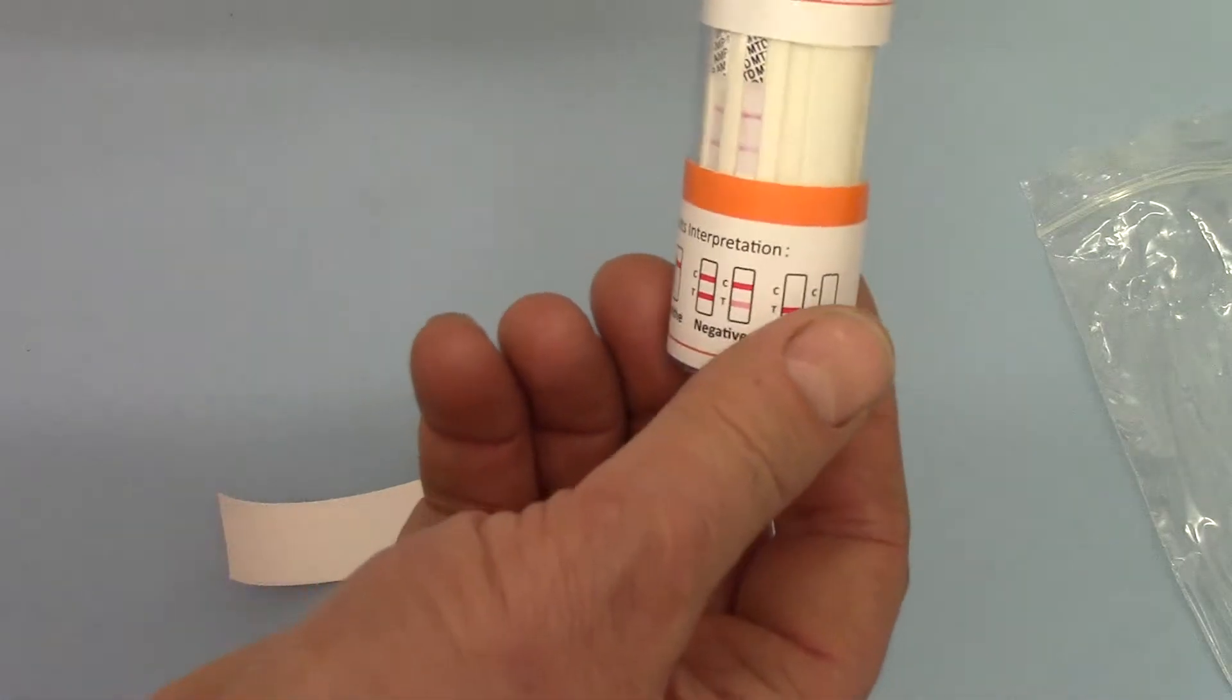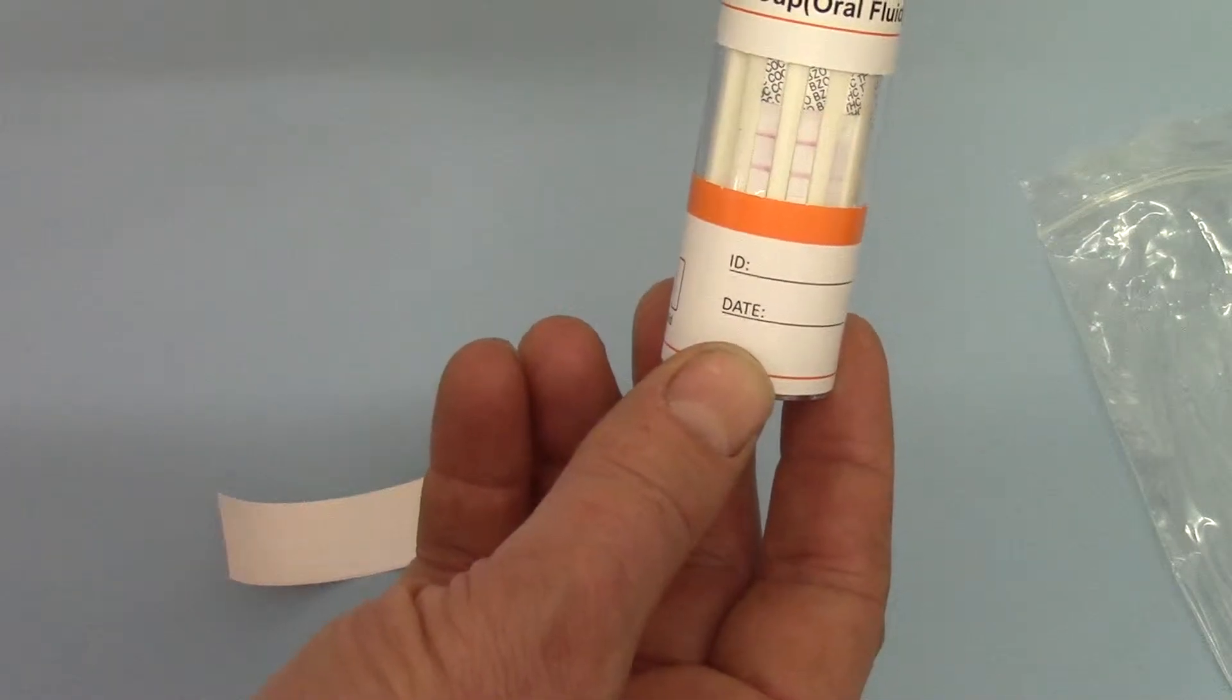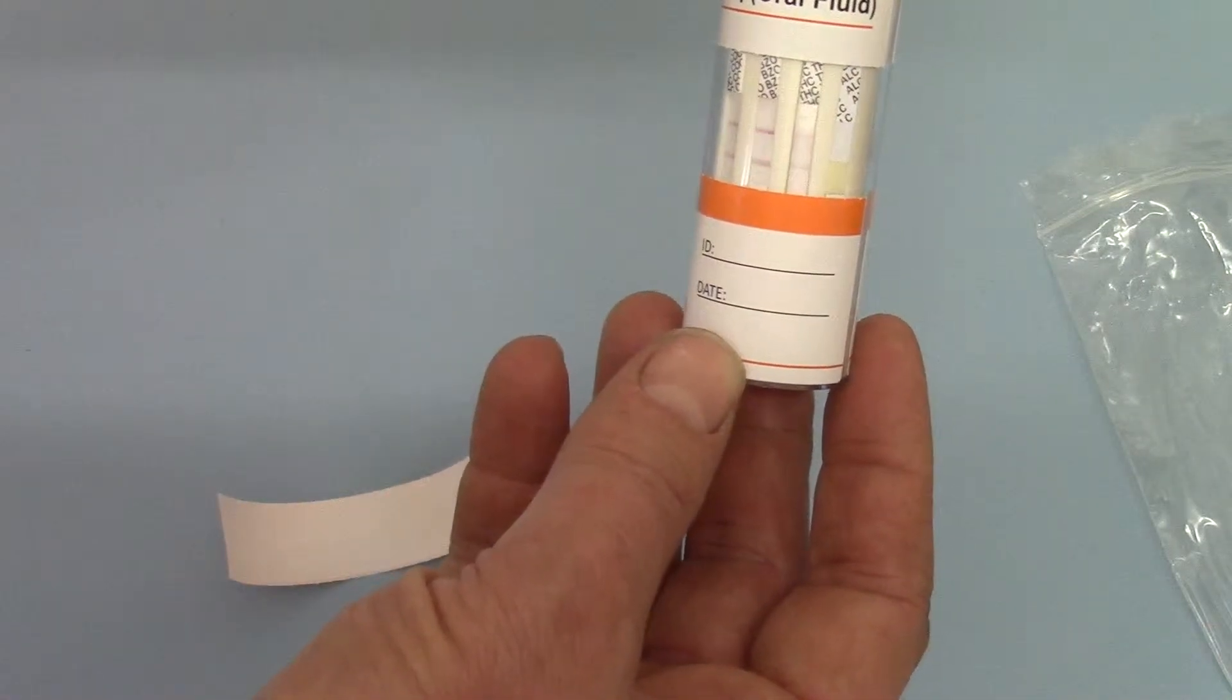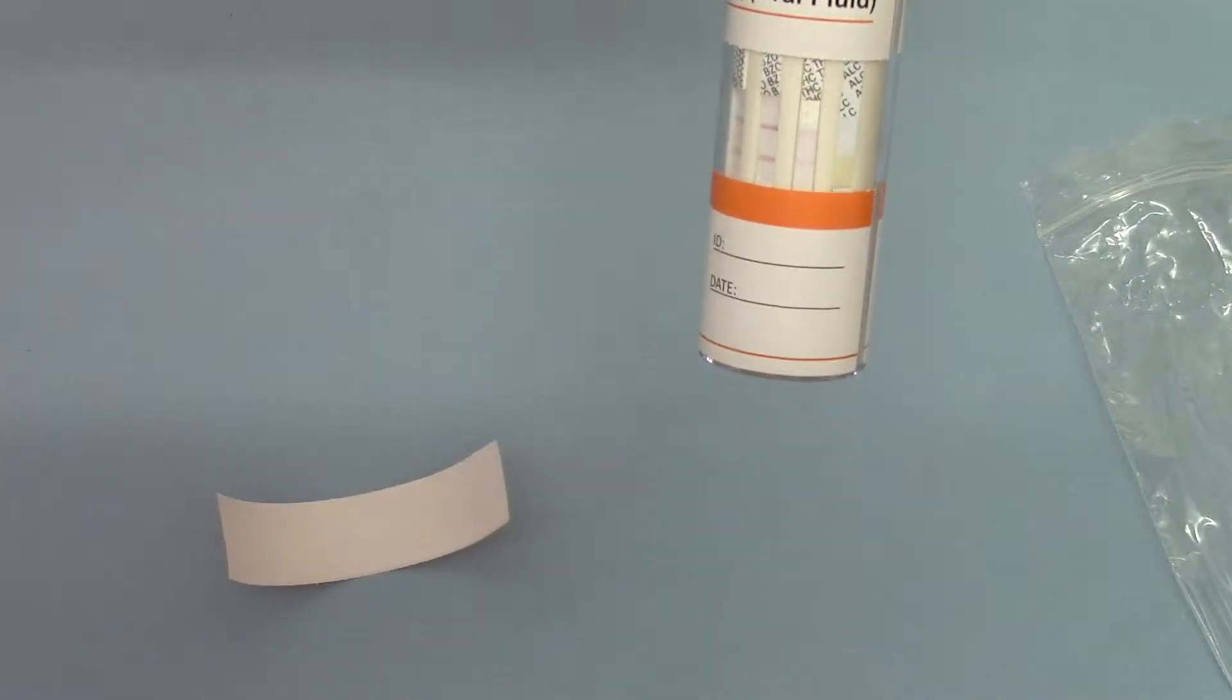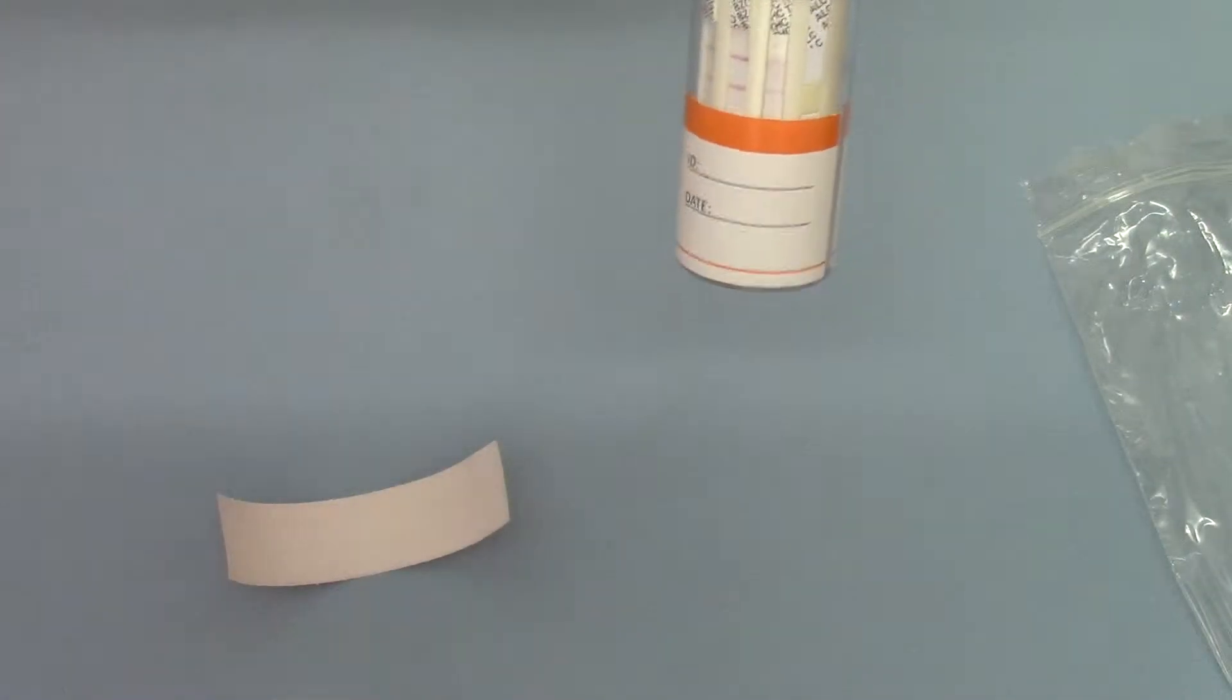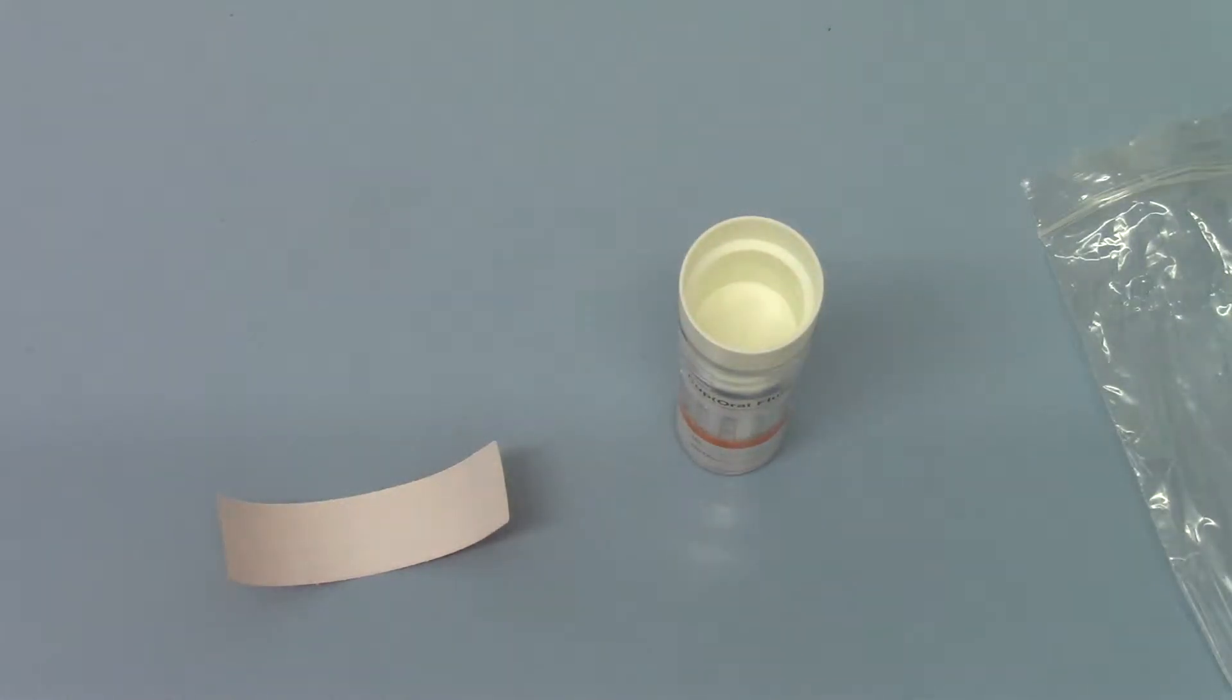It's important with any positive results to wait for the full five minutes developing time for any test line to develop. But you can already see with these that we're getting test lines showing on all. We're just waiting now for that cannabis line, won't be helped by the fact that I'm holding it on an angle. Ideally, these should be placed vertically such as that for the test to run.